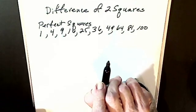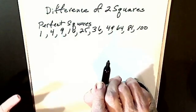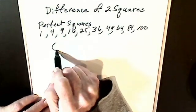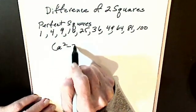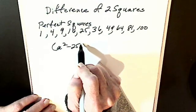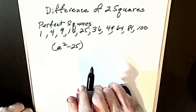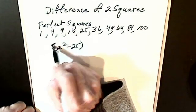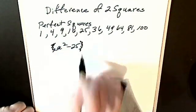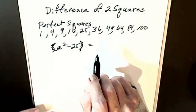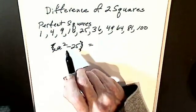A perfect square is a number I can take the square root of evenly. So now, let's say I have this, a squared minus 25. Actually, I don't even need the parentheses.